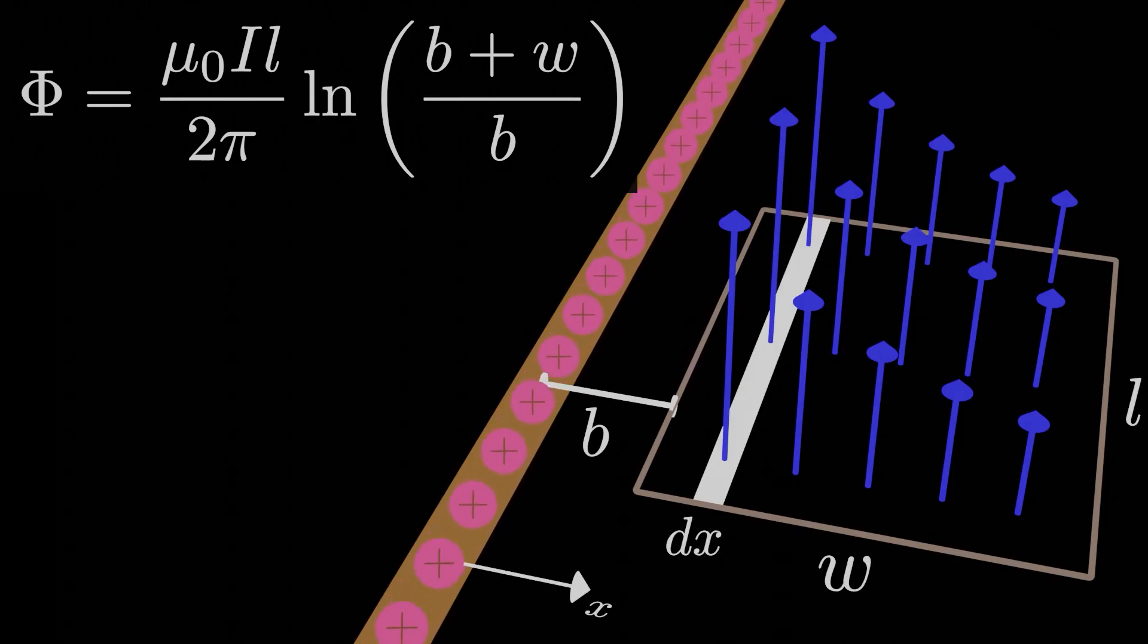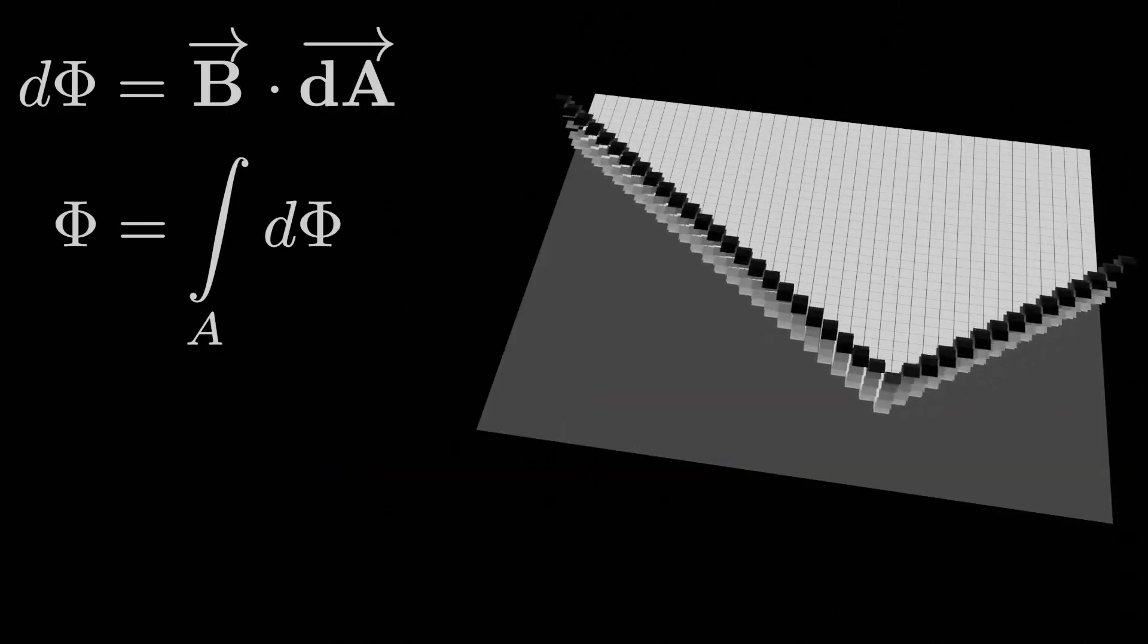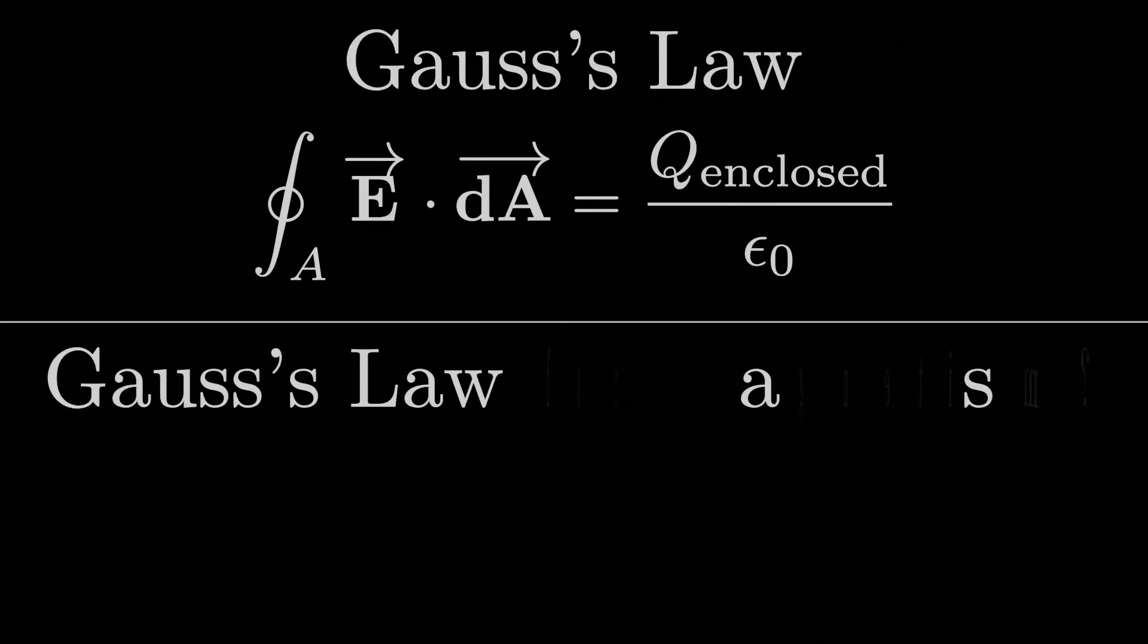Now we've gone through how we translate electric flux to magnetic flux in the uniform case as well as in the non-uniform case. There was this thing we went over called Gauss's law in the electric field case, and a natural question might be, can we define anything similar with magnetic fields? Is there like a Gauss's law equivalent for magnetism?